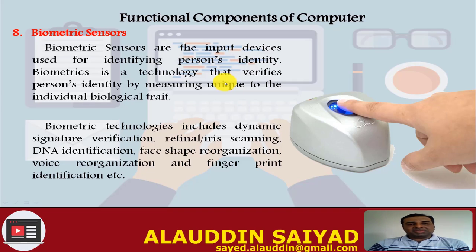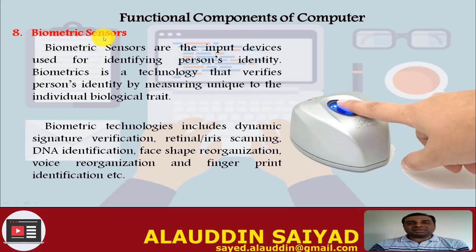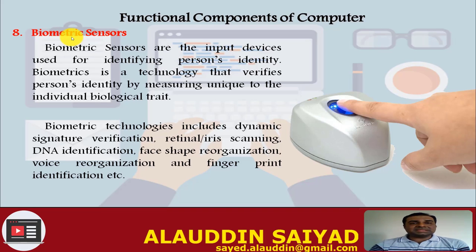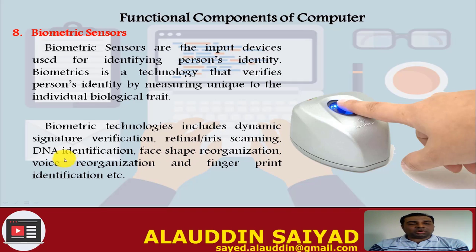Biometric Sensors. Biometric sensors are input devices used for identifying a person's identity. Biometrics is a technology that verifies a person's identity by measuring unique individual biological traits. A fingerprint being scanned is an example of a biometric sensor. Other biometric sensors include retina scanners and DNA scanners. Biometric technologies include dynamic signature verification, retinal and iris scanning, DNA identification, face shape recognition, voice recognition, and fingerprint identification.